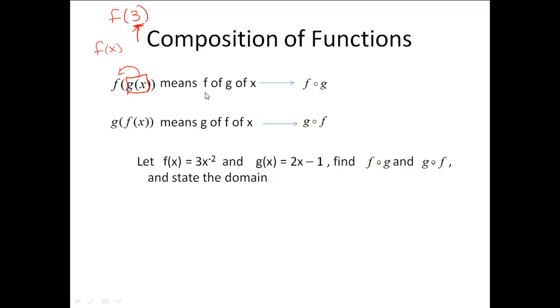So this one right here is read f of g of x, and a short way that they might write that is f, and then there will be an open circle and a g. So that means the exact same thing. Now, we can flip our f and our g around. So we could say g of f of x, and then it would be written a g first, an open circle, and then an f.